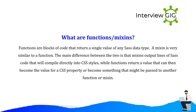What are functions and mixins? Functions are blocks of code that return a single value of any Sass data type. A mixin is very similar to a function. The main difference is that mixins output lines of Sass code that will compile directly into CSS styles, while functions return a value that can then become the value for a CSS property or be passed to another function or mixin.